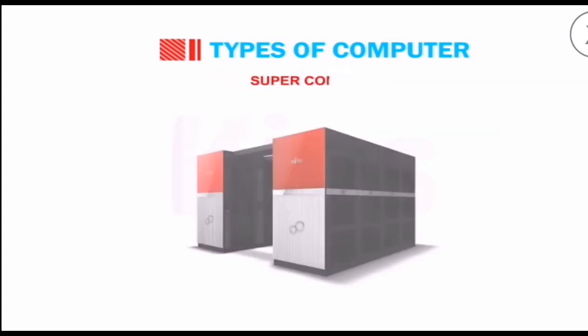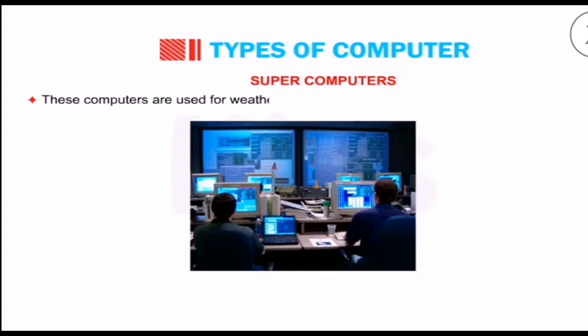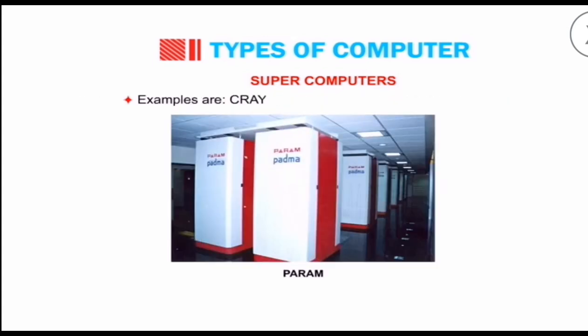Let's move to the fourth type of computer: supercomputers. They are the most powerful computers with huge processing speeds. These computers are used for weather forecasting, satellite control, and space research. The best examples are Cray 1, Cray 2, PARAM, ETA A10, etc.